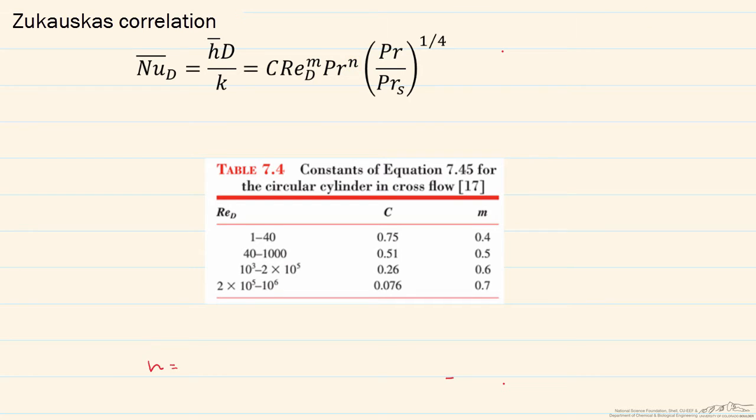So you use N equals 0.37 if the Prandtl number is less than 10. Otherwise, if the Prandtl number is greater than 10, you use N equals 0.36.